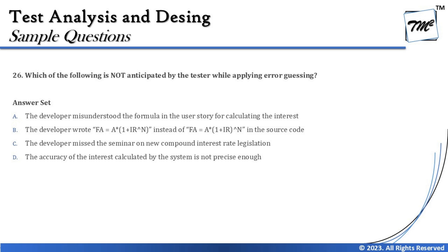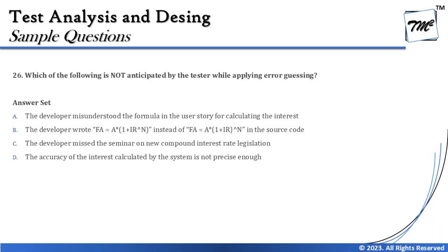Option A looks like a very good option because it is an example of anticipating the developer's error — developers do tend to make these types of mistakes. I can always take into account where my developer can go wrong in their practice or pattern. Option B says the developer wrote some equation like FA = A × (1 + r)^n instead of FA = A × (1 + ir)^n in the source code.